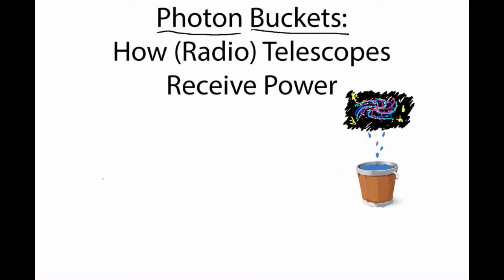I wanted to talk in the context of radio astronomy about how our photon buckets collect energy off the sky and the different sets of units that we have for describing the signal that we receive through various stages of analysis. Radio telescopes are unique in that we're used to getting the signal electronically as an electrical signal over a wire.